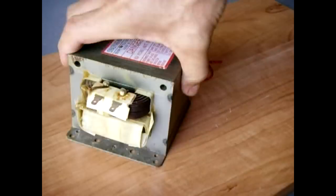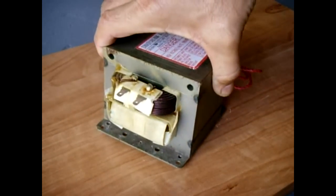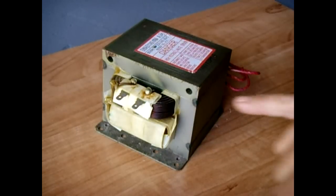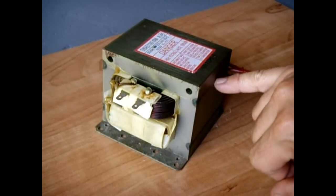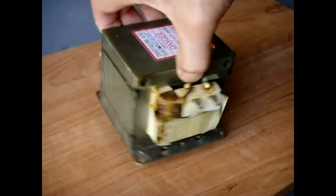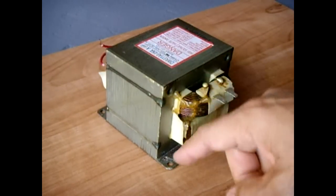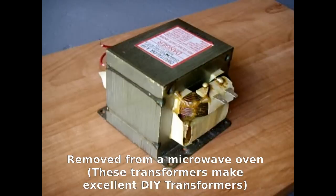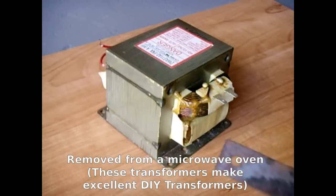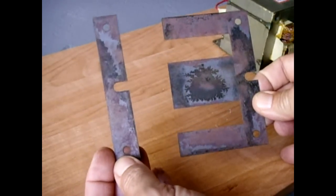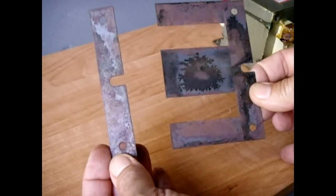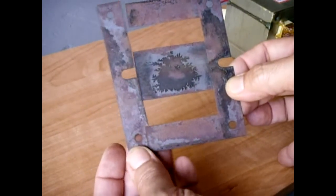Now, in order to do that, I'm going to cut the core open. You can see there's a weld line right here and there's a weld. This is an EI transformer core. What I mean by that is the transformer core is made up of laminations just like this: E's and I's.